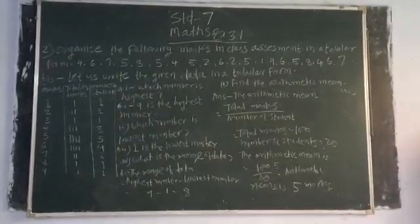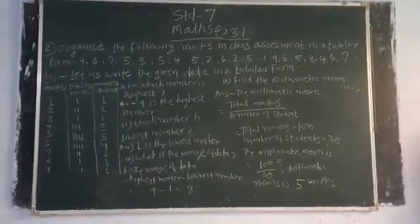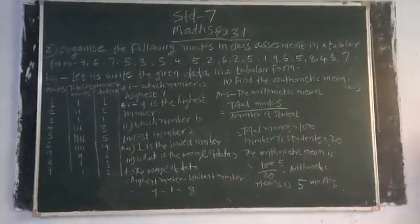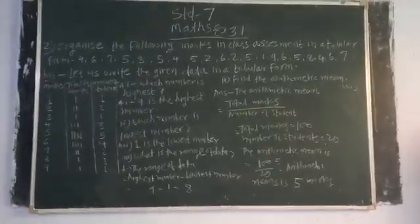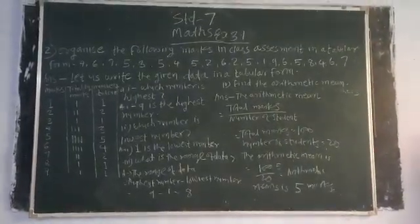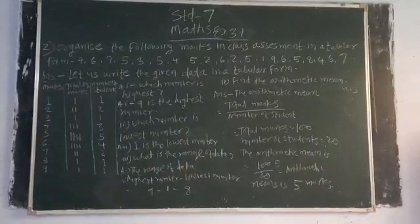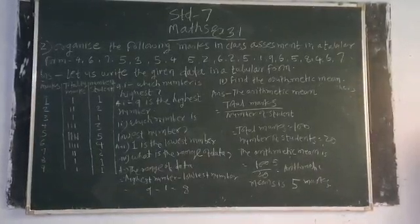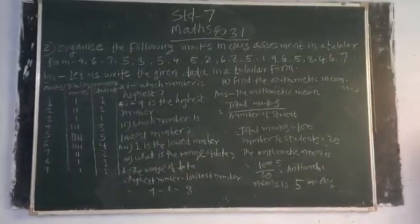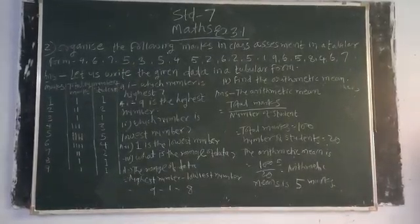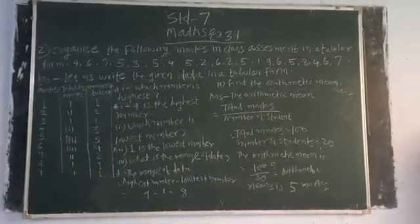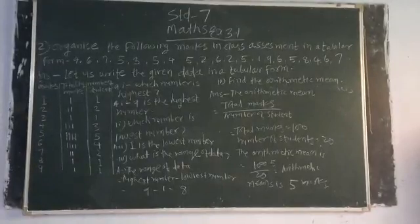We will organize the following marks in class assessments in tabular form. The given data is: 4, 6, 7, 5, 3, 5, 4, 5, 2, 6, 2, 5, 1, 9, 6, 5, 8, 4, 6, 7. We have been given these marks and we will organize them in tabular form.